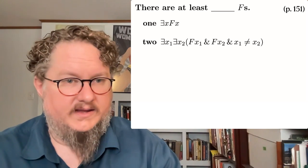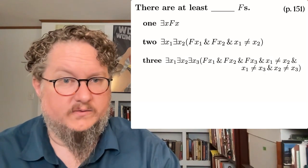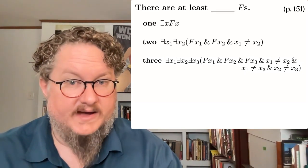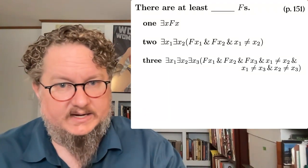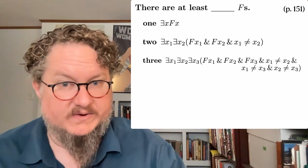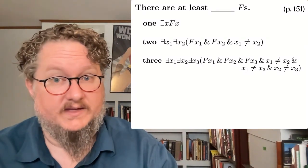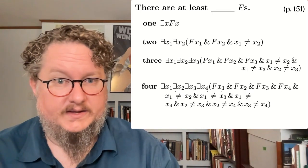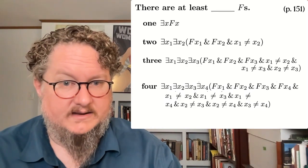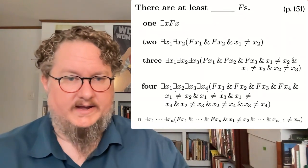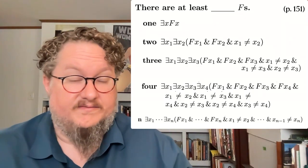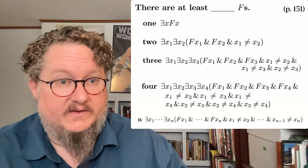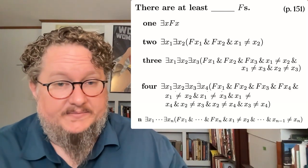As we increase our number to three, the expression gets more complicated. We need three quantifiers and three variables. We apply F three times, and then we have to assert non-identity between all the different pairs of variables. With four, it becomes even more complicated. We can define an expression for 'there are at least N Fs' for any number N. These are all laid out on the reference sheet on page 151 of the book.